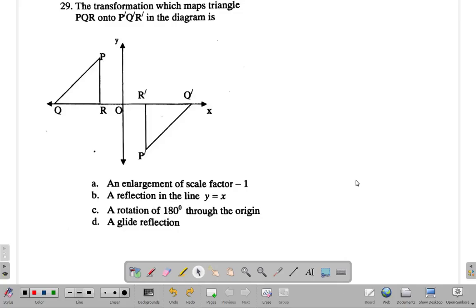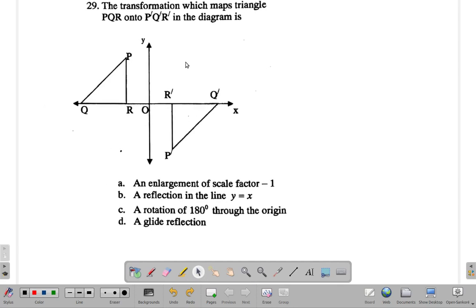Question 29. The transformation which maps triangle PQR - that's this triangle - onto P'Q'R', that's this triangle in the diagram.